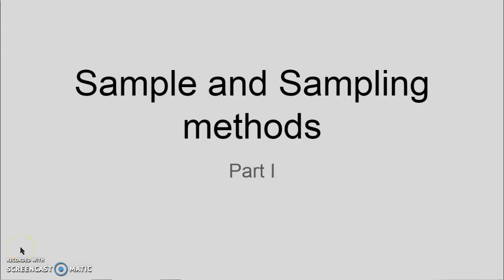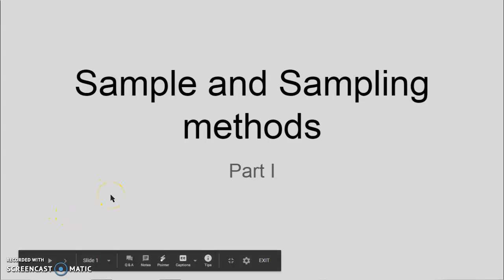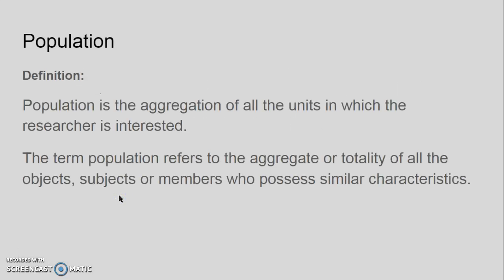This video talks about population, sample, and sampling methods. In research, the population is the aggregation of all the units as per the researcher's interest. The term population refers to the aggregate or totality of all the objects, subjects, or members who possess similar characteristics. So if the researcher is interested in under-five children, then all the under-five children in the country come under the population.